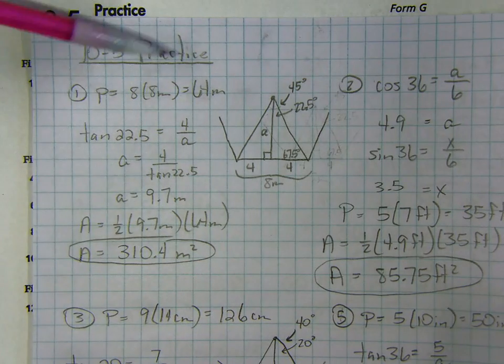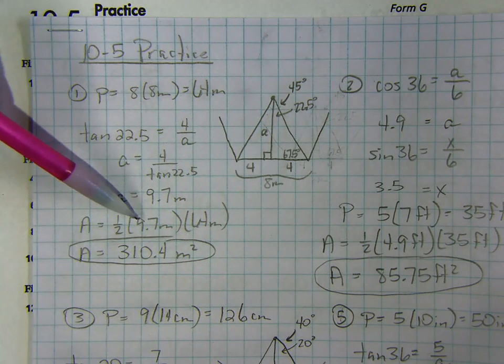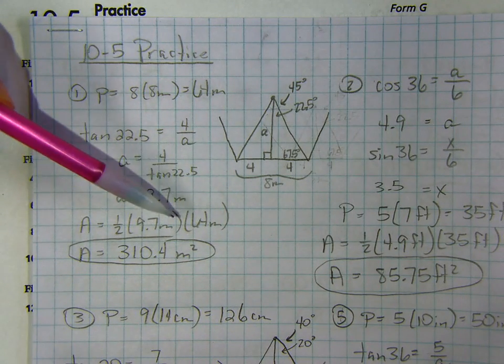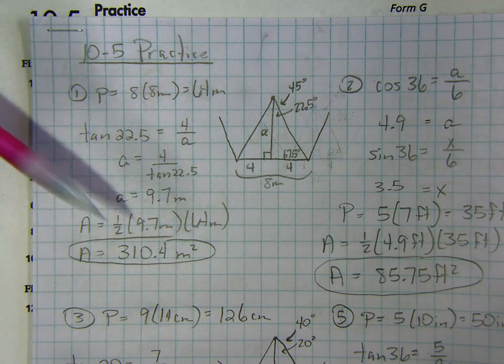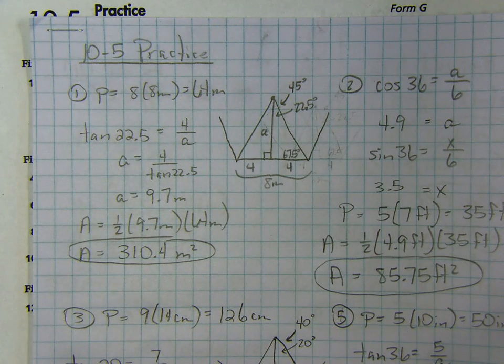Now I just use the apothem, plug it in the formula. The area is equal to one half of the apothem, 9.7 meters, times the perimeter, 64 meters, and I got 310.4 meters squared. And that was the answer.